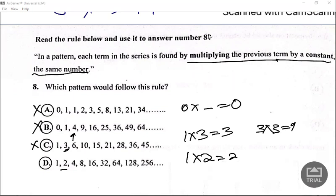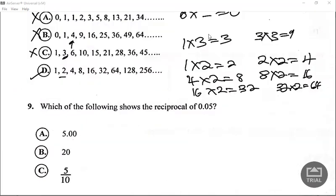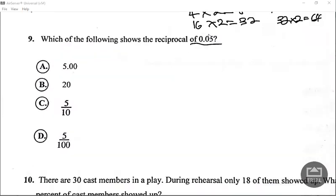Which of the following shows the reciprocal of 0.05? First of all guys, let us write this as a fraction. So we move the decimal place one, two, so we know it's going to be 5 over 100. That is the same as 0.05, right?